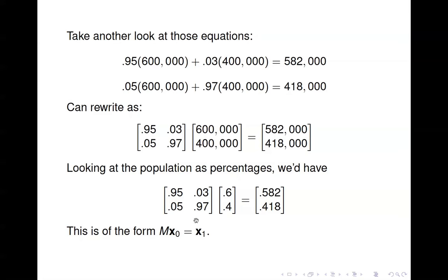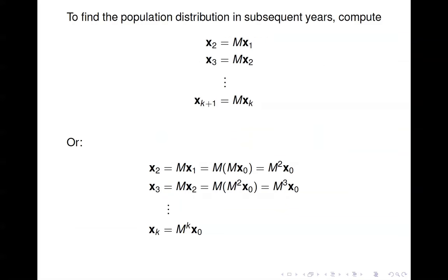Notice that each one of these vectors — the columns of the matrix and our two state vectors — sums to one, so they represent probabilities. This is of the form M times x₀, the original state, which gives x₁, the state in year one. We can continue that process to figure out year two, year three, and so forth: x_{k+1} is just M times the population from the previous year. To figure out 10 years from now, I'd need x₉, which requires x₈, and so on.